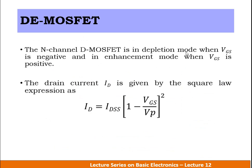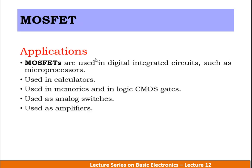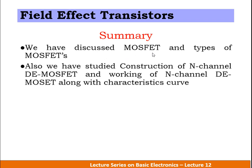The N-channel DE MOSFET operates in depletion mode when VGS is negative and in enhancement mode when VGS is positive. The drain current ID is given by the square law expression: ID = IDSS × (1 − VGS/VP)². MOSFETs are used in digital integrated circuits such as microprocessors, calculators, memories, CMOS logic gates, analog switches, and amplifiers. In summary, we discussed MOSFETs, types of MOSFETs, construction and working of N-channel DE MOSFET, and its drain characteristics curve.